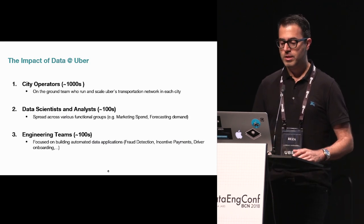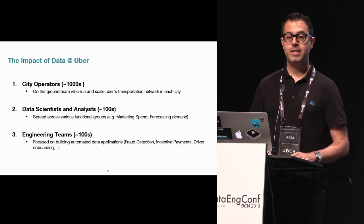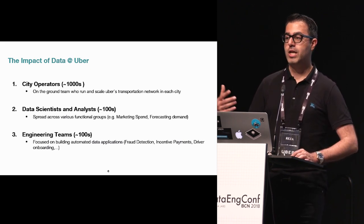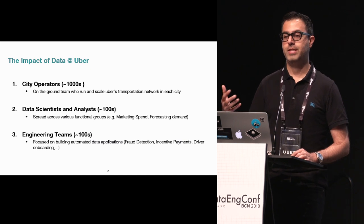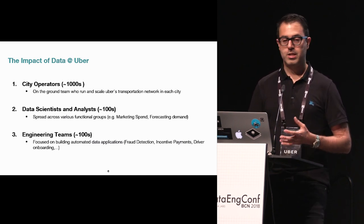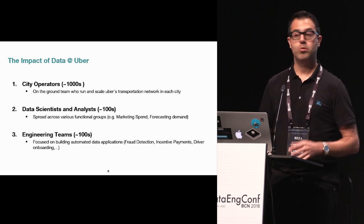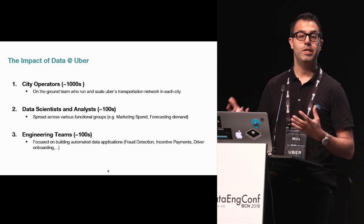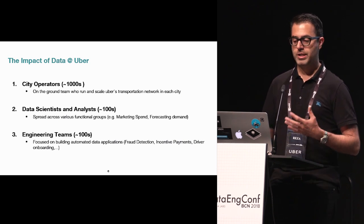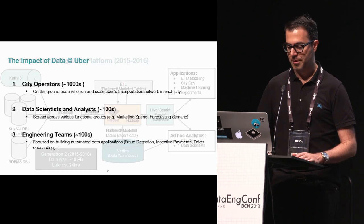The third category of data users at Uber are engineering teams — teams across the company that build products relying on this data to serve specific business needs. Good examples include fraud detection, incentive payments to drivers, or onboarding new drivers and riders. We have hundreds of engineering teams across the company building products on top of our data.